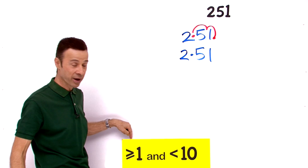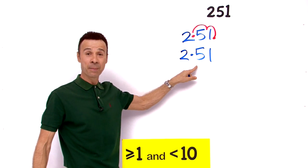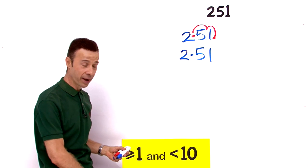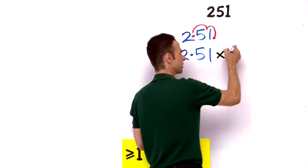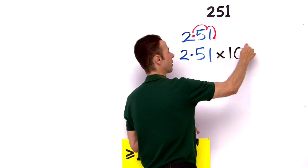The new decimal place goes there, so essentially the number is now 2.51. Is that less than 10 and greater than or equal to 1? Yes it is. 2.51. Now that number is less than 251 obviously, so we need to balance it. We're going to multiply it by, and this is the thing about scientific notation, we multiply by 10 to some exponent power.